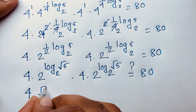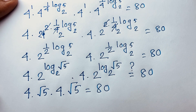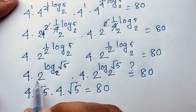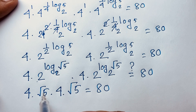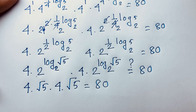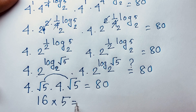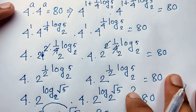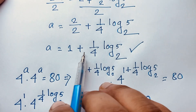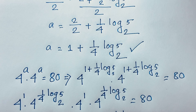This gives us 4 root 5 times 4 root 5 equals 80. We know that 2 to the power log base 2 of root 5 equals root 5 by logarithm rules. So 4 times 4 equals 16, and square root 5 times square root 5 equals 5. Therefore 16 times 5 equals 80, confirming 80 equals 80. Our final answer is a equals 1 plus one quarter log base 2 of 5. Thank you all — if you enjoyed this video, please subscribe to my channel. Goodbye, take care.